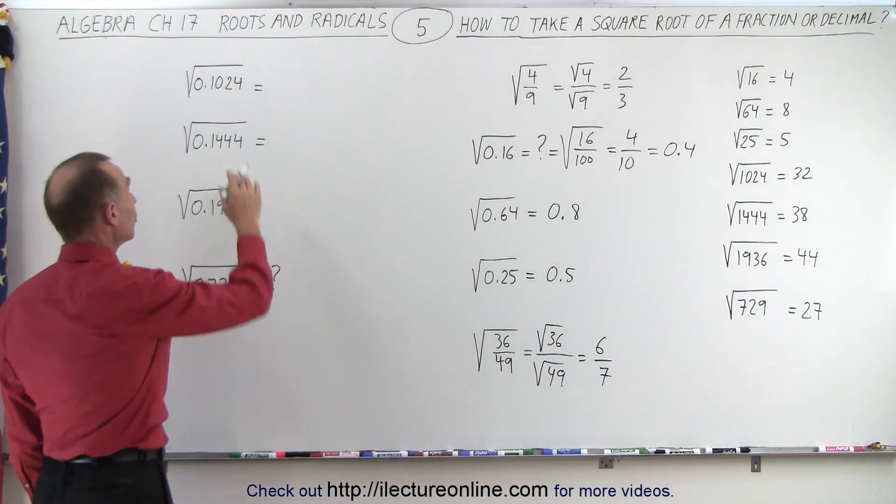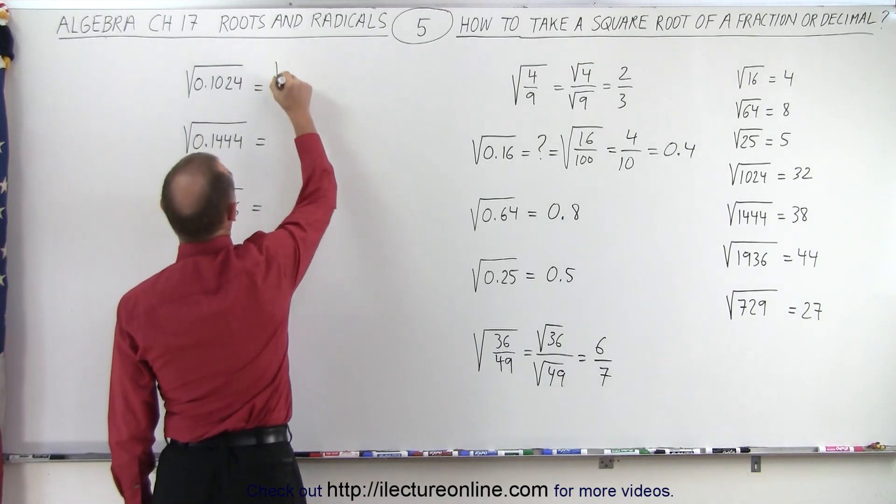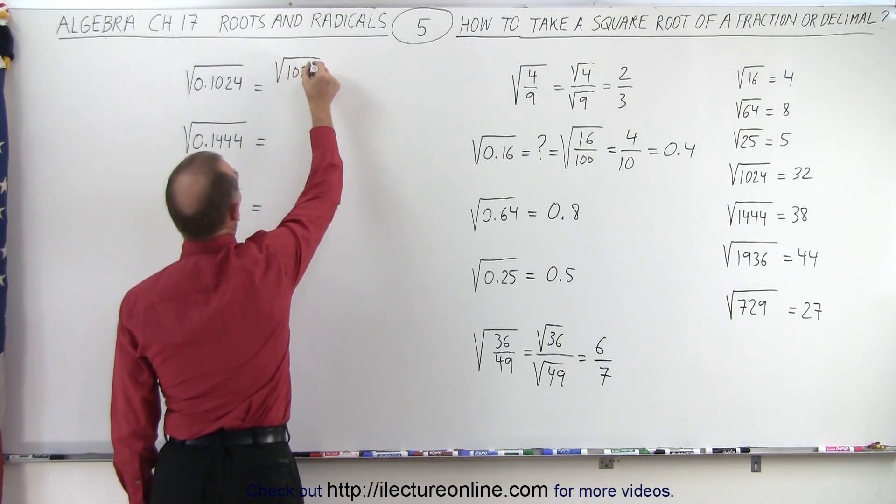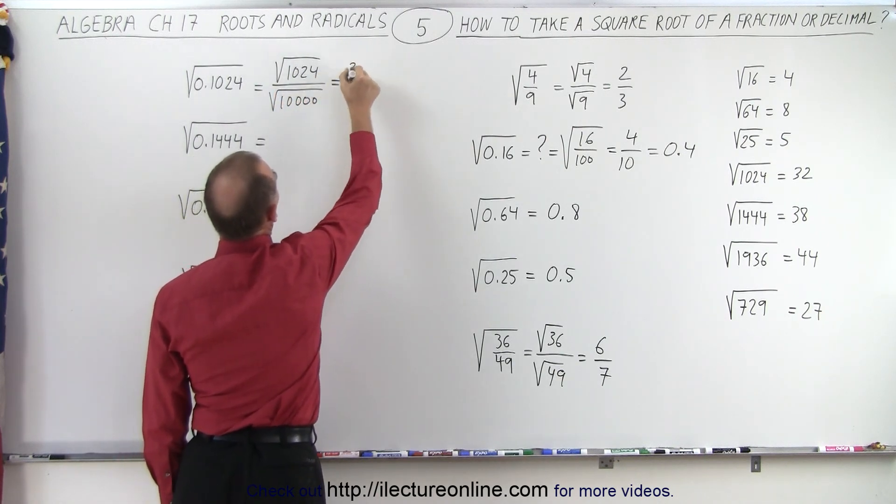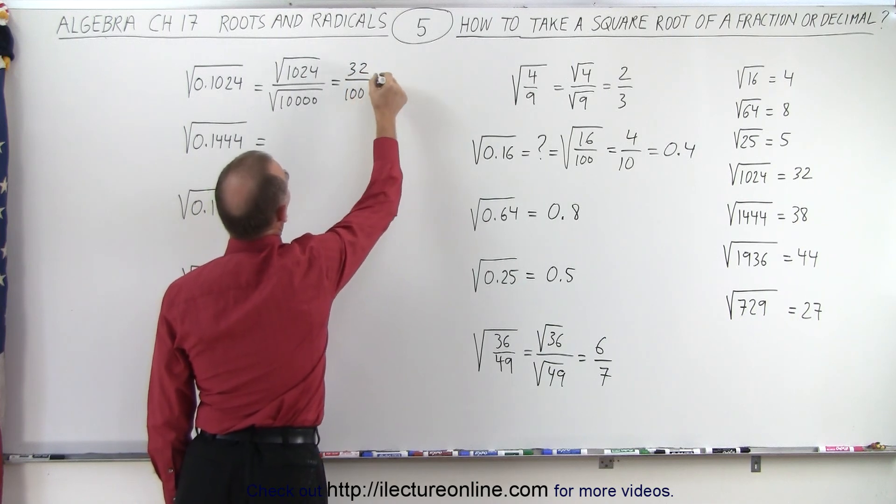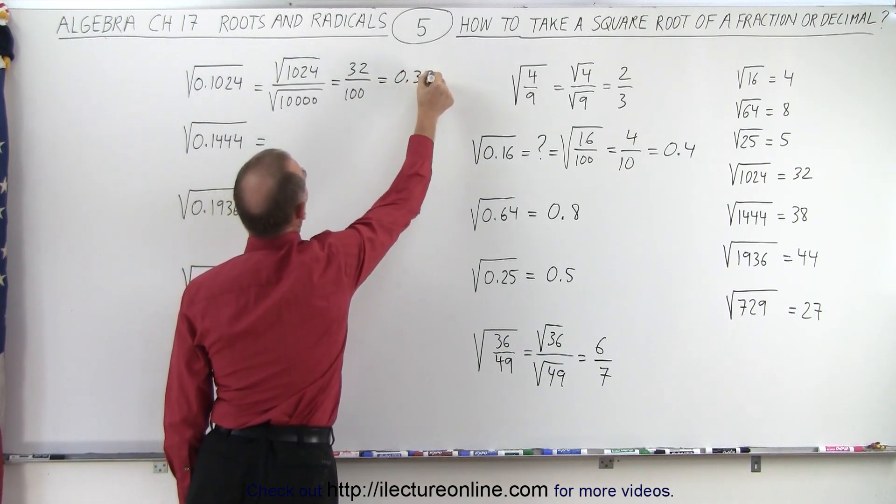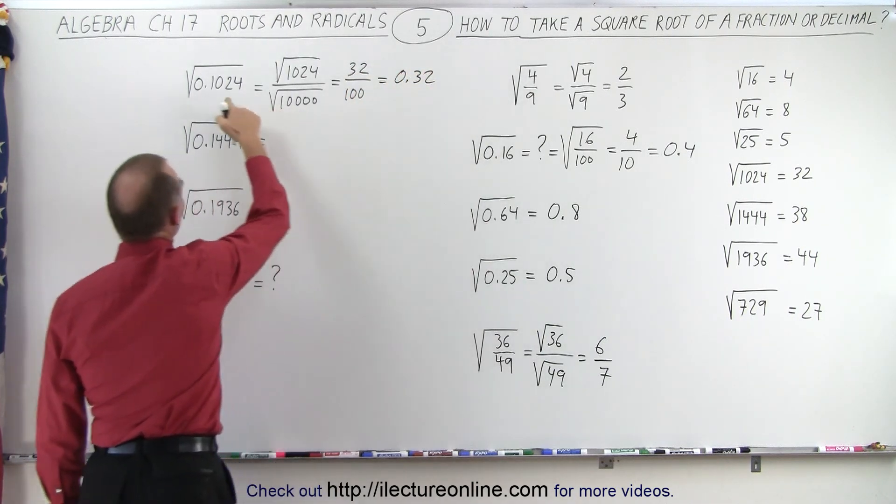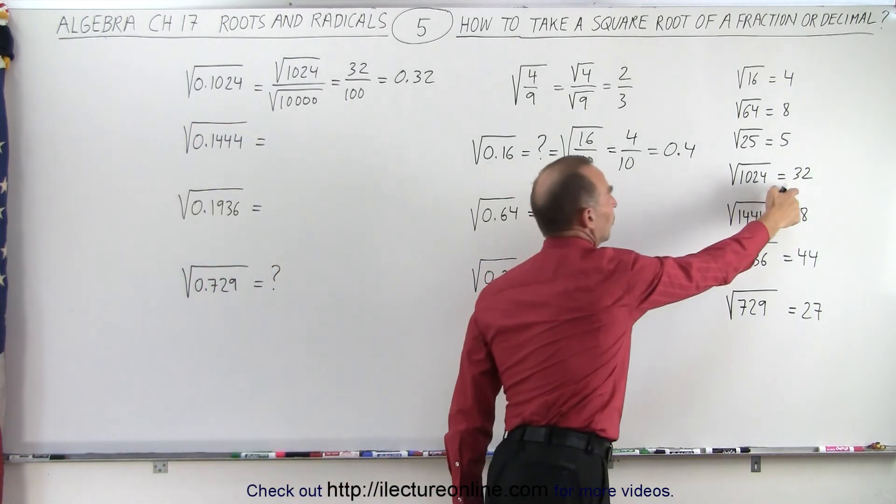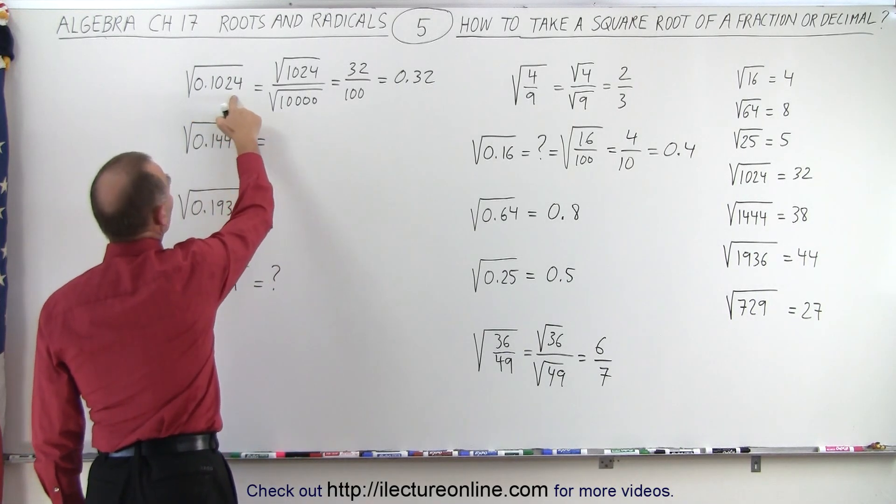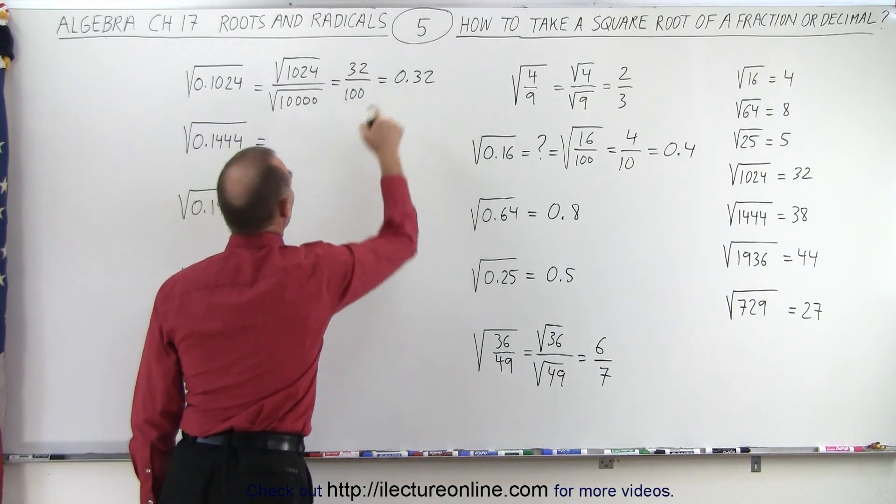The answer is yes. Again, you can write this as the square root of 1024 divided by the square root of 10,000. And then you say, well, that's equal to 32 divided by 100, or 0.32. Or we could have directly gone to that number by realizing that the square root of 1024 is equal to 32, so the square root of 0.1024 is equal to 0.32.